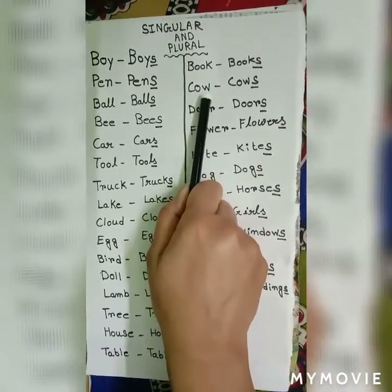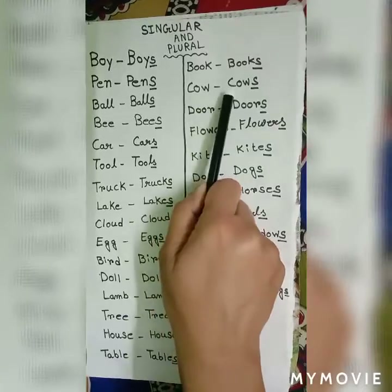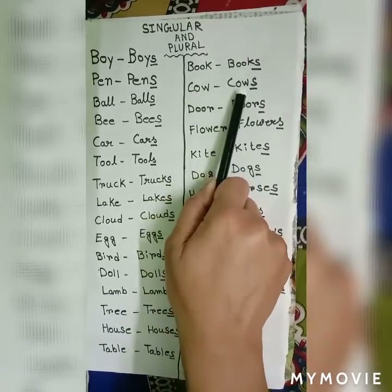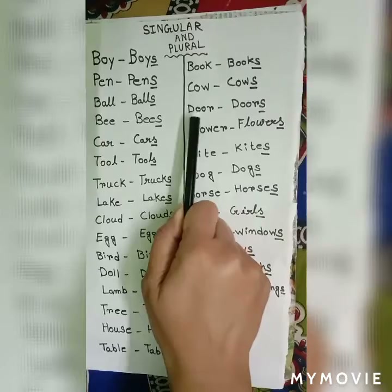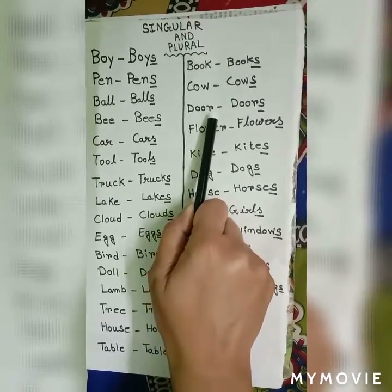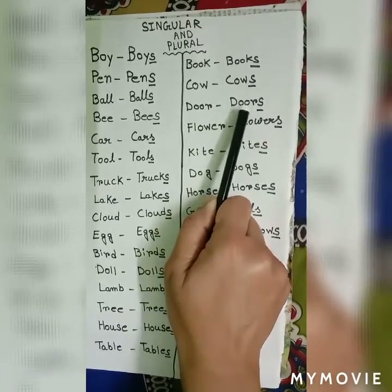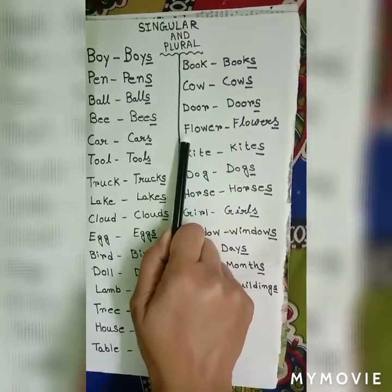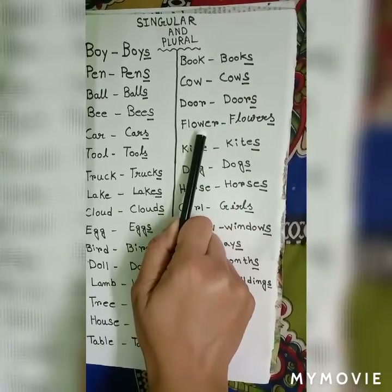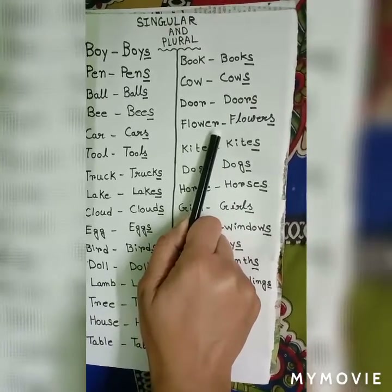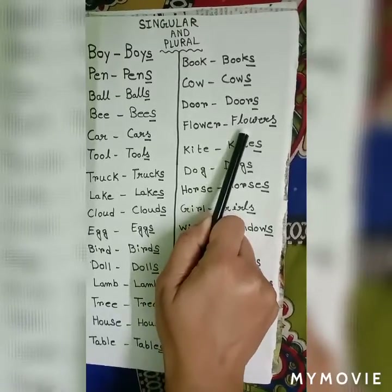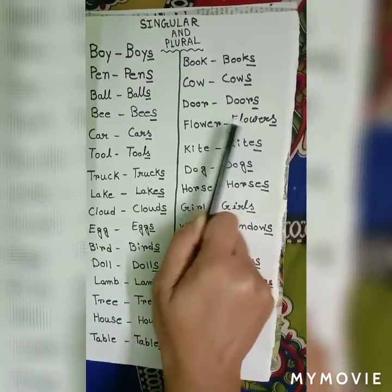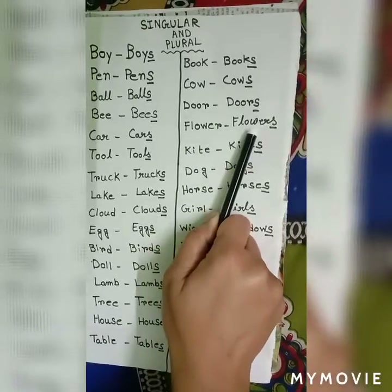C-o-w, cow — c-o-w-s, cows. One cow, many cows. D-o-o-r, door — d-o-o-r-s, doors. F-l-o-w-e-r, flower — f-l-o-w-e-r-s, flowers. One flower, many flowers.